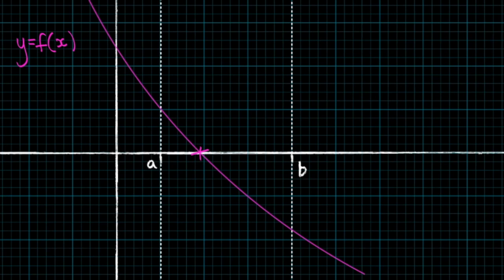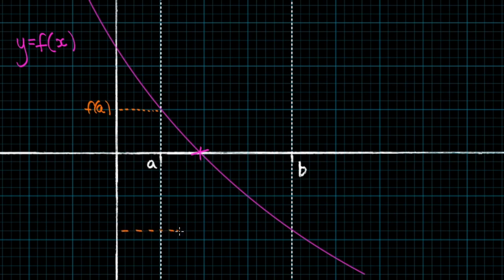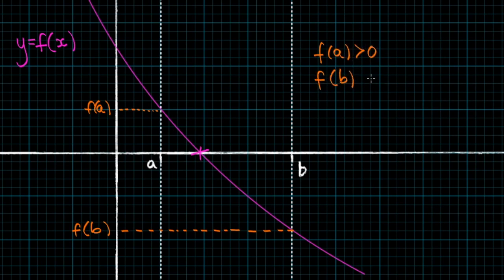So what do I mean by that? Well, notice how the function at a, or in other words f of a, is a positive number. So if I were to draw a line connecting to the y-axis, we would end up with a positive value for f of a. Whereas the function at b, or in other words f of b, is a negative number. So we have a positive number for f of a and a negative number for f of b, and that's the change of sign that we're referring to.